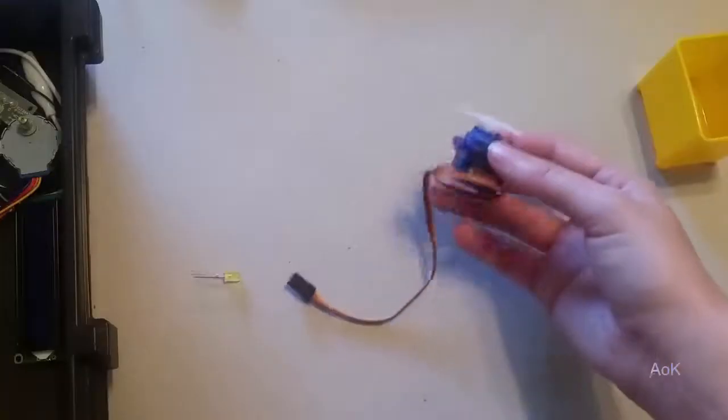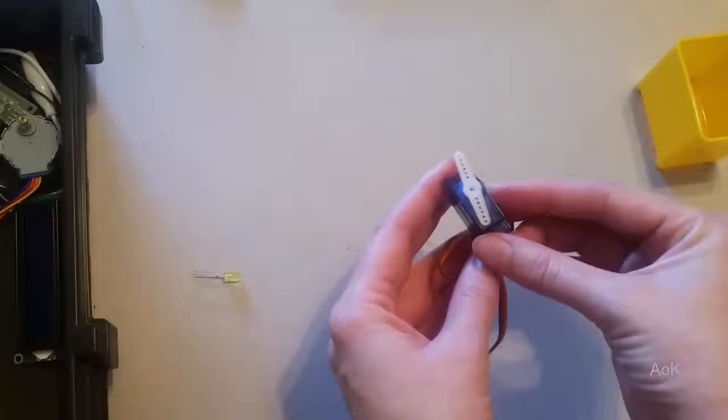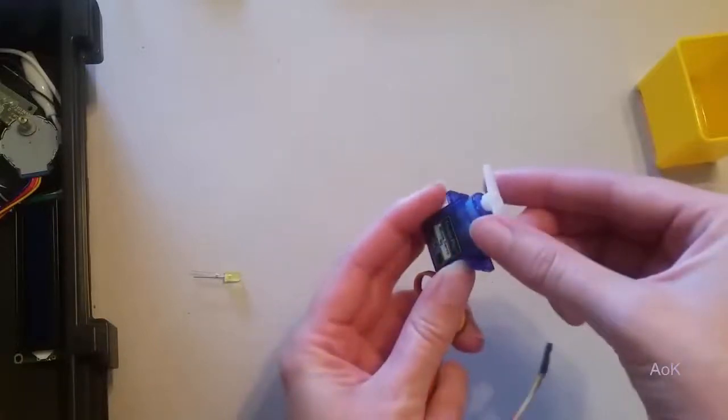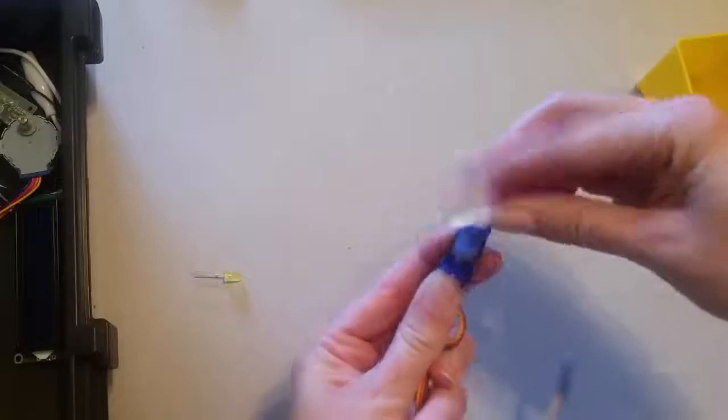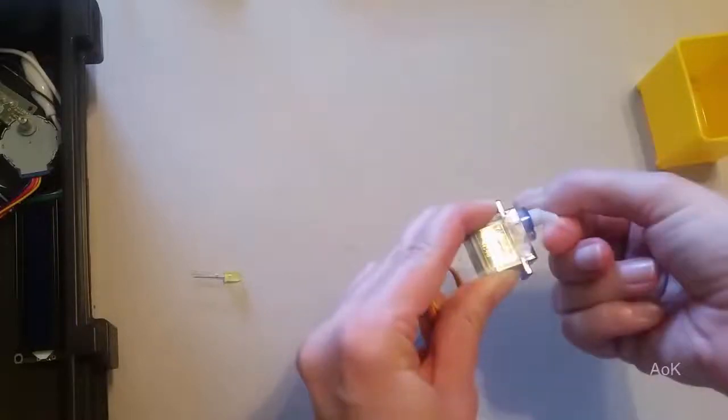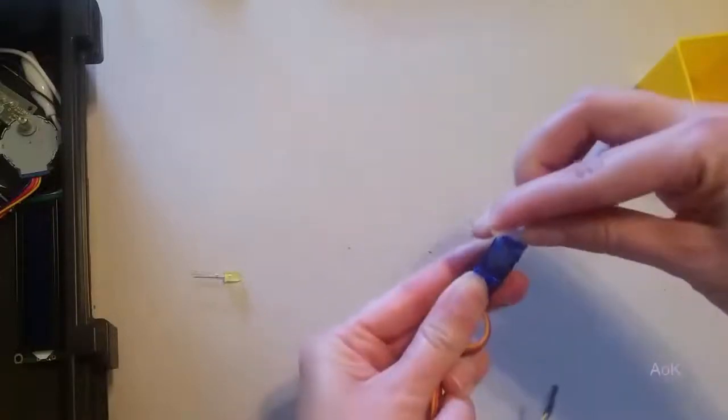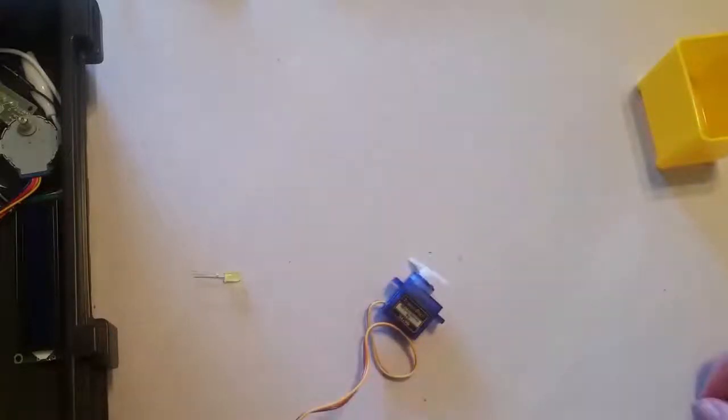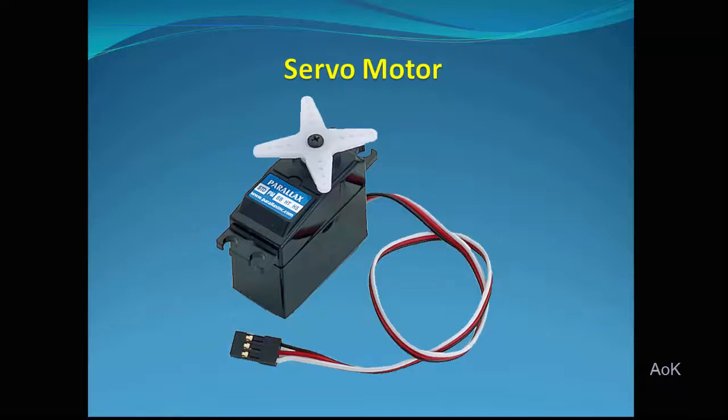Servo motors come in a variety of different sizes. This one's a microservo. Pretty much the way it works is there's a little motor inside, and it will allow the servo head to rotate up to 180 degrees. It's great for opening and closing different devices. You can also get 360 degree rotation servos.